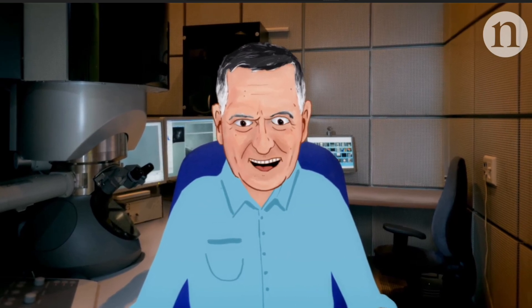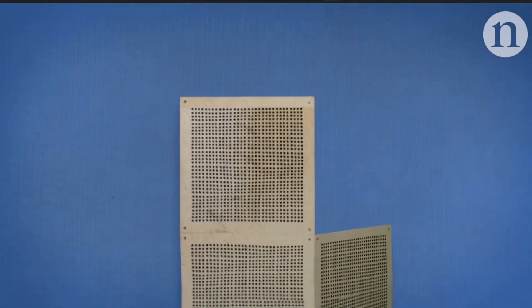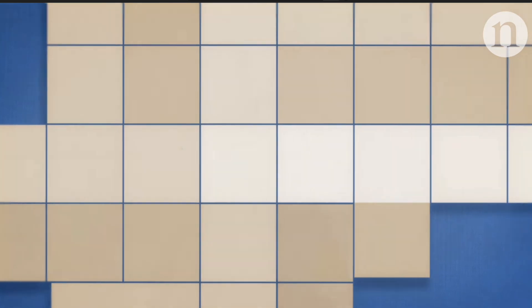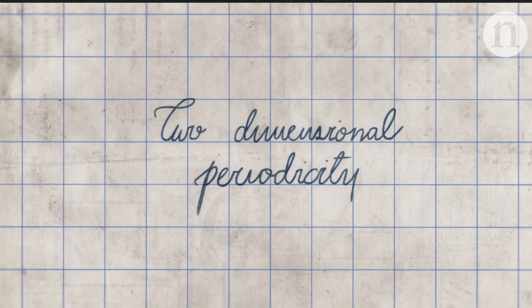If you want to understand periodicity, look at tiles on the floor. If there are squares, then in each and every direction that you point, you see that the tiles repeat themselves exactly the same way. This is a two-dimensional periodicity.